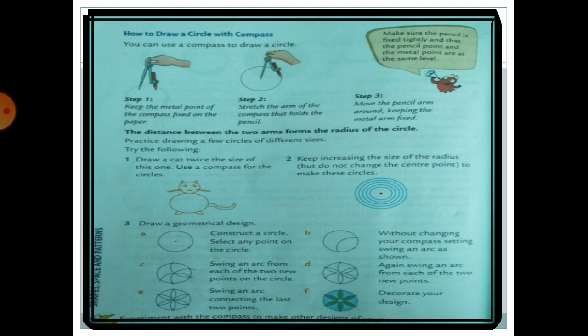Here is an activity: draw a geometrical design. Take a paper, pencil, and compass. Fix a center point and draw a circle. Then draw an arc — any point on the circle can be the starting point. An arc is the curved line portion of a circle. Swing the compass from one arc to the next, moving around the circle. At the end you will get a beautiful geometric design — try this at home!